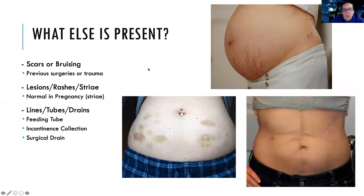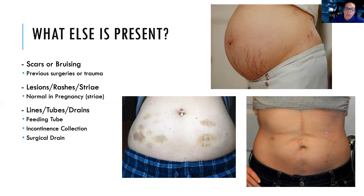We also want to look for scars or bruising. If they've had previous surgeries or traumas, we need to know about them because that helps us better care for them. We also want to look for any lesions, rashes, or stretch marks — which are sometimes normal, like in pregnancy, but sometimes can be a sign of an abnormality. We also want to look for lines, tubes, and drains, feeding tubes, tubes from the bowel or the bladder, and surgical drains — all of these things are really important to look at.